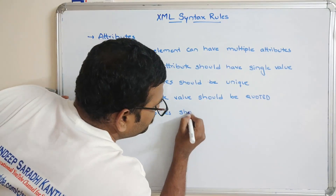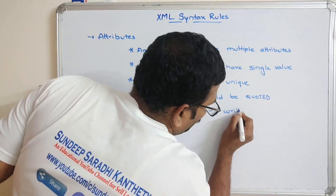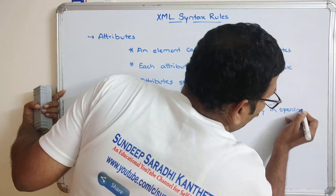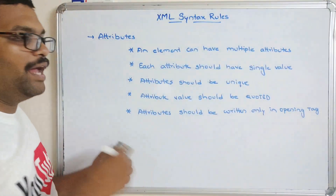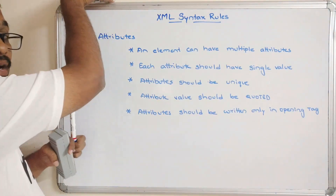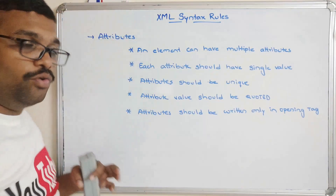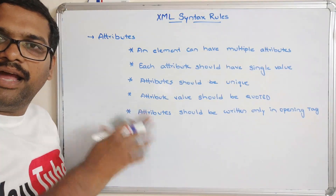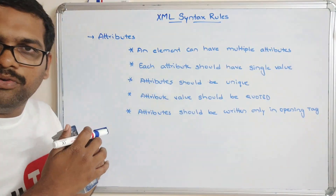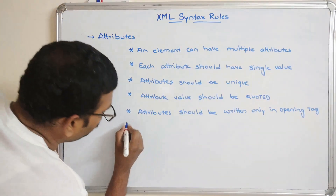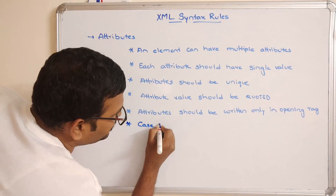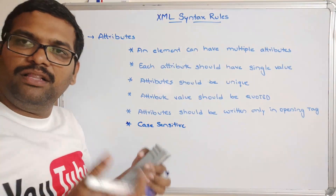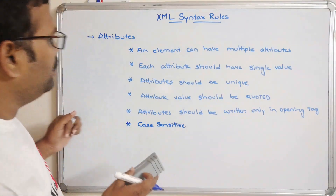Attributes should be written only in the opening tag — not in the closing tag. These are all the rules we need to follow while writing attributes. Every element can have many attributes, and just like with tags, attributes are also case sensitive: there is a difference between lower case and upper case characters.